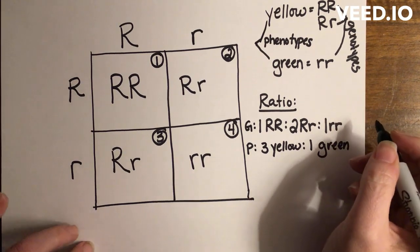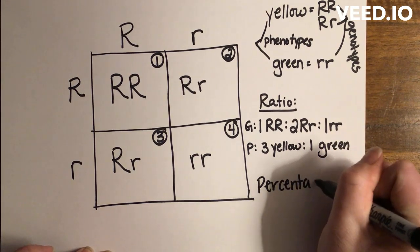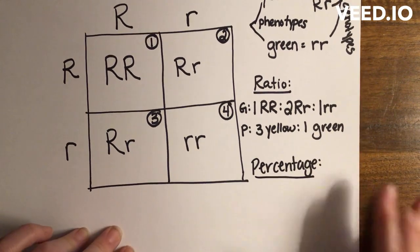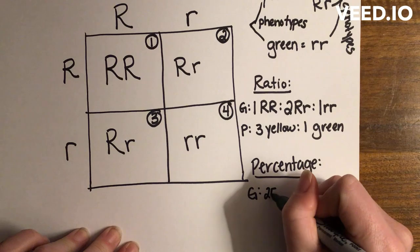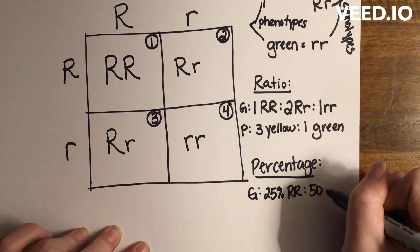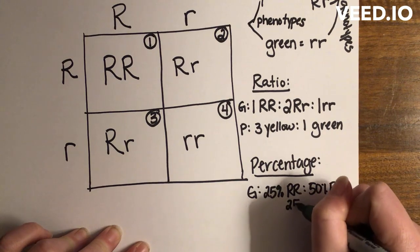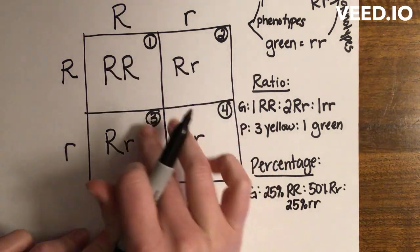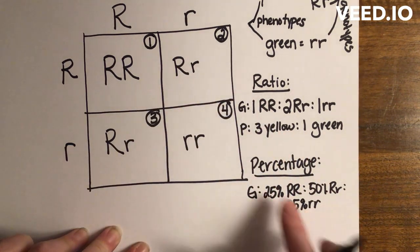Sometimes you're asked for the percentages. If I wanted that, again for the genotype, I would write 25 percent homozygous dominant, 50 percent heterozygous, and 25 percent homozygous recessive. That's because each box is worth 25 percent, so if I've got one box here, it's 25. I've got two boxes of this, so that's 50. I've got one box of this, that's 25.